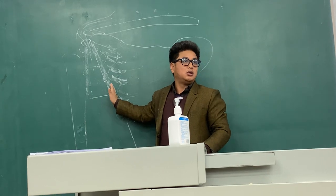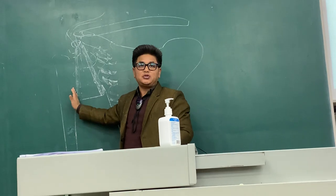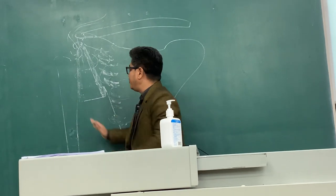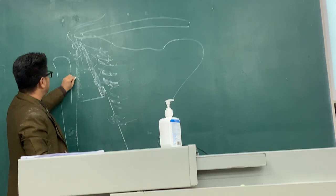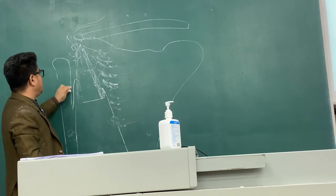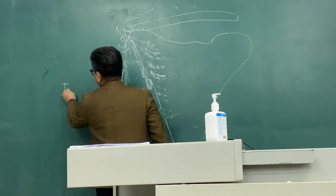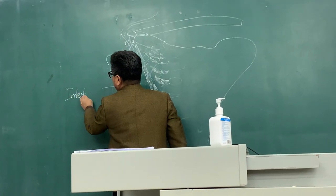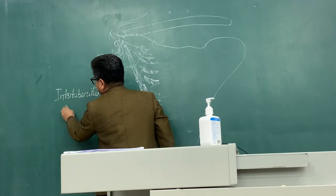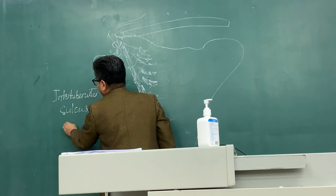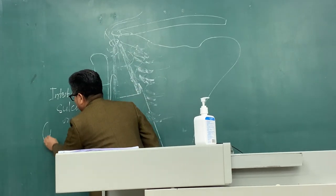Please remember that. Now let us see the lateral wall. The lateral wall is formed — we know that we have a greater tubercle here and a lesser tubercle here, and between them there is an intertubercular sulcus.